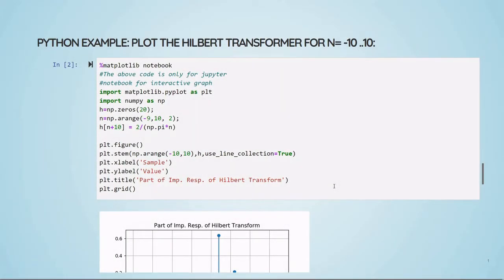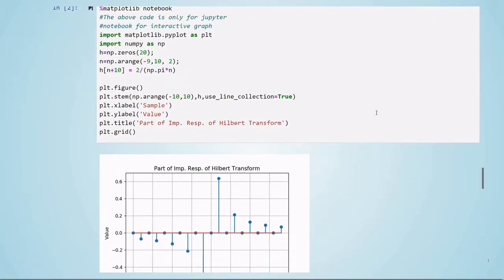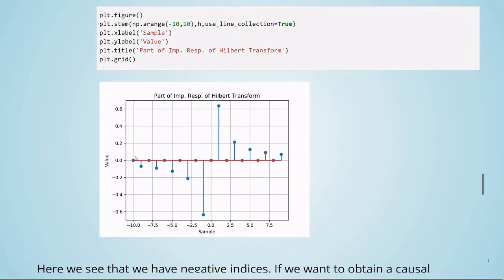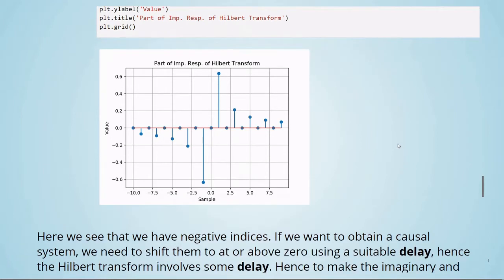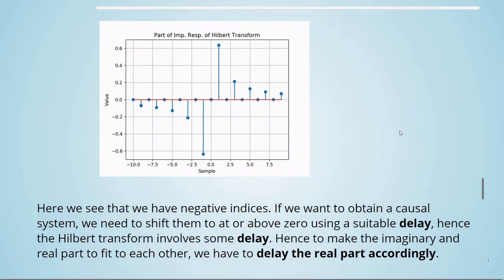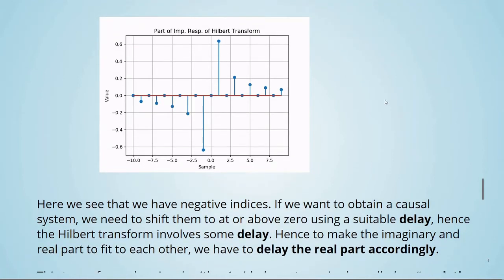In this Python example, we are plotting the Hilbert transformer for n going from minus 10 to 10. We are importing matplotlib to plot and numpy. Here, we are defining our Hilbert transformer. We see here this 2 divided by π times n. And here, we are plotting the impulse response of the Hilbert transform. Here we have value, here we have our samples. And we see that we have negative indices. If we want to obtain a causal system, we need to shift them to at or above zero using a suitable delay. Hence, the Hilbert transform involves some delay, and to make the imaginary part and real part fit to each other, we have to delay the real part accordingly.